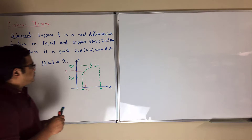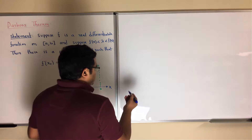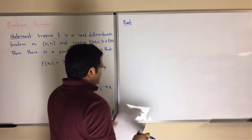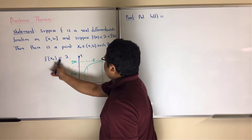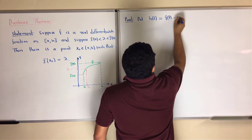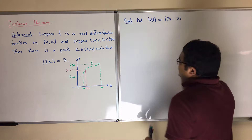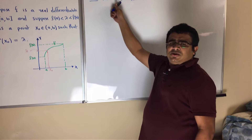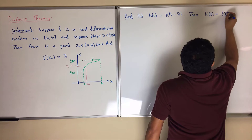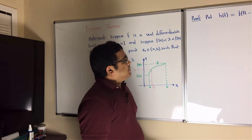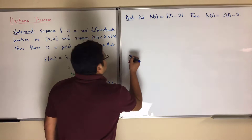Now we will prove the theorem. To prove the theorem, we let h of t equals f of t minus lambda times t. Since the function f is differentiable, h will also be differentiable. Therefore we can write h prime of t equals f prime of t minus lambda.